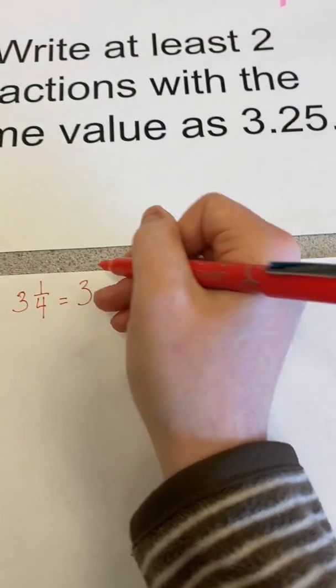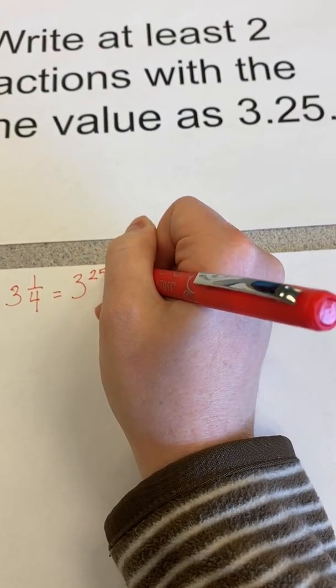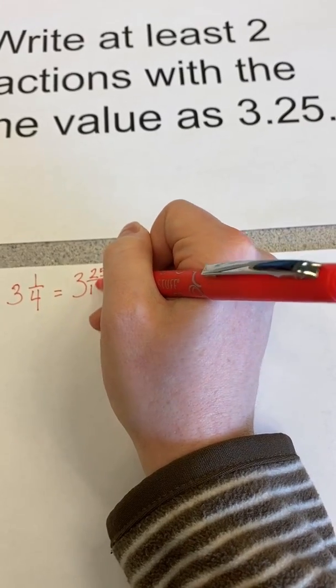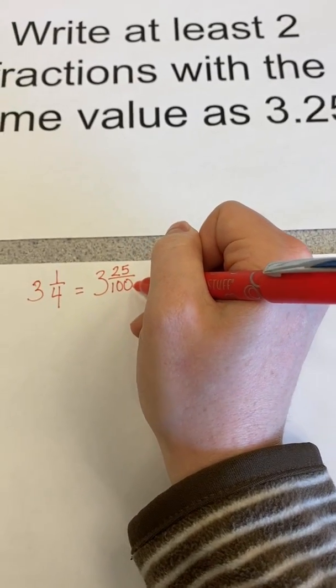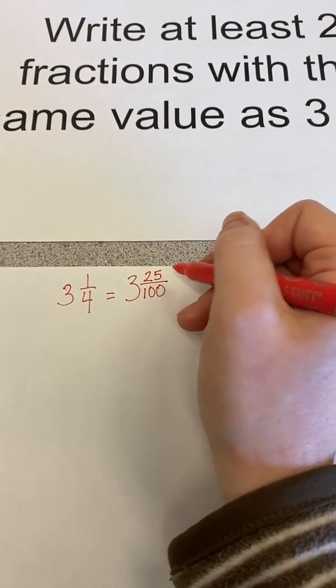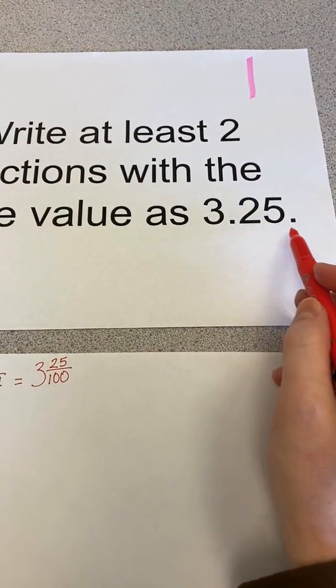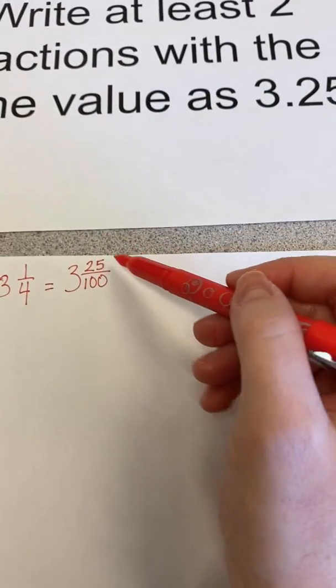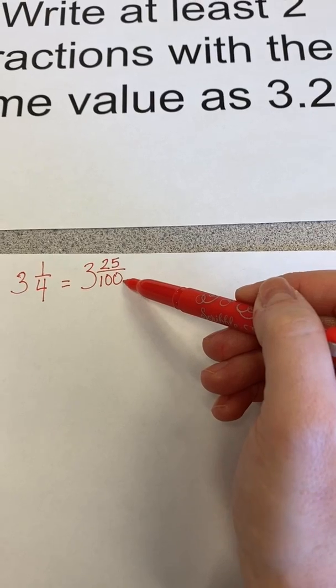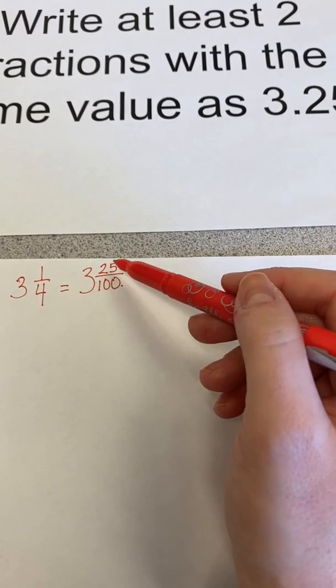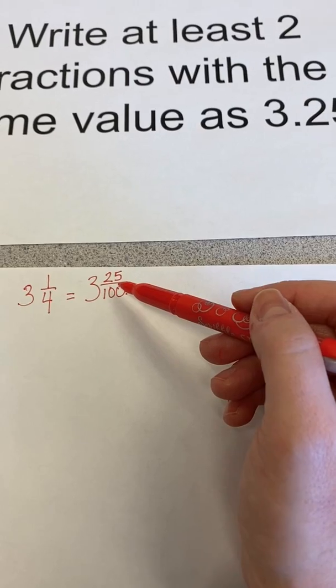But that is also the same since we said 25 cents is a quarter of a dollar, and a dollar is the same as 100 pennies. I know that 25 hundredths is written as 25 hundredths as a fraction. I could also say that's the same as three and 25 hundredths.